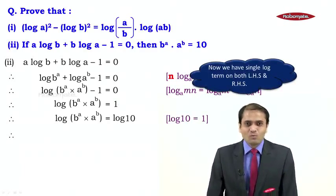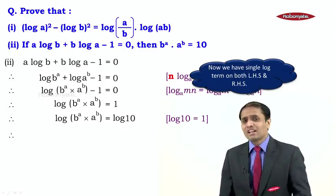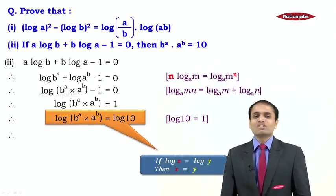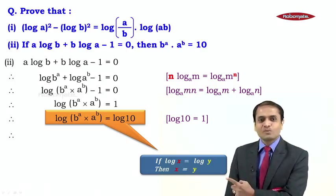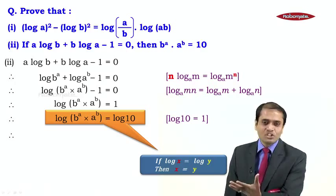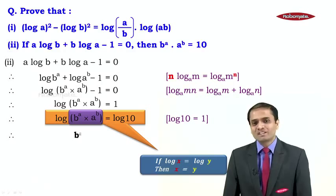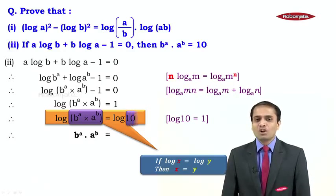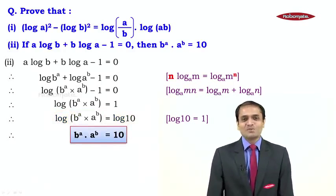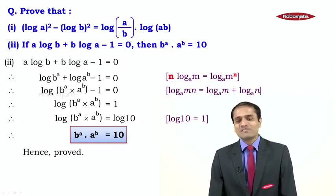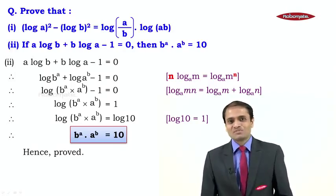With a single log on both sides, the equation is in the form log x = log y, which means x = y. So we can remove the logarithms: b^a times a^b = 10. That is exactly what we had to prove. Hence the second question is also proved. I hope you understood both these proofs — thank you.